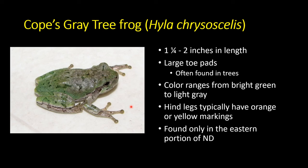These are typically found well above ground level. They can be bright green to light gray, and the same individual can change — they have the ability to redistribute pigment molecules to match their background or to regulate temperature. So any given tree frog can be bright green one minute and light gray a couple minutes later. The hind legs typically have orange or yellow markings on the inner thigh, and also tend to have some black markings.